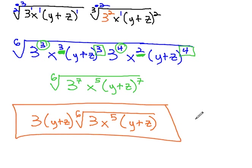This becomes our final simplified solution, 3 y plus z, times the sixth root of 3x to the fifth, y plus z. We were able to combine these mixed index by finding a common index and treating the binomial as one factor like one variable.